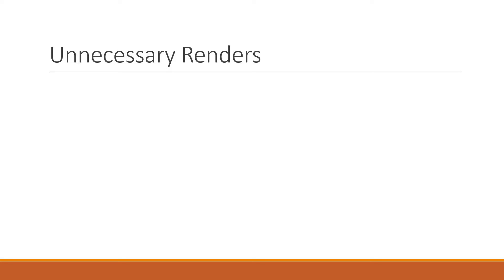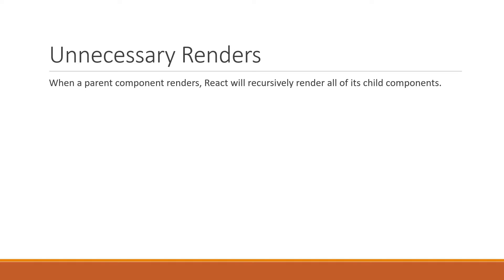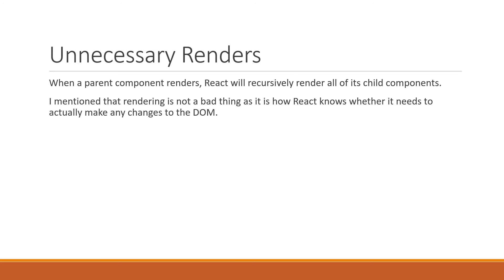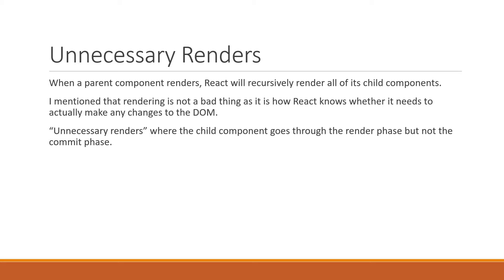In the last video, we learned about the rendering behavior with respect to parent and child components. We learned that when a parent component renders, React will recursively render all of its child components, and that is the default behavior. Rendering is not a bad thing as it is how React knows whether it needs to make any changes to the DOM. I also talked about unnecessary renders where the child component goes through the render phase but not the commit phase. In this video, we are going to recap that scenario and I'm going to show you a simple technique to avoid the unnecessary render of a child component.